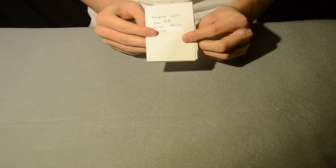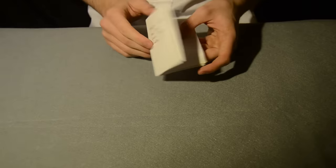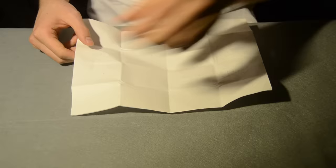On the outside, write the word prediction. On the next fold, write, there'll be 25 facedown cards. On the next fold, write, 10 of these cards will be black. On the next fold, write that all of the cards are clubs. Then place your ace of spades prediction within the paper.